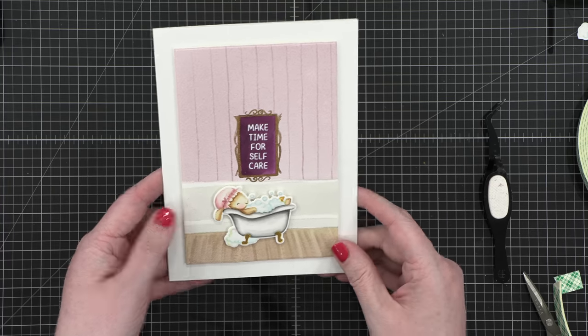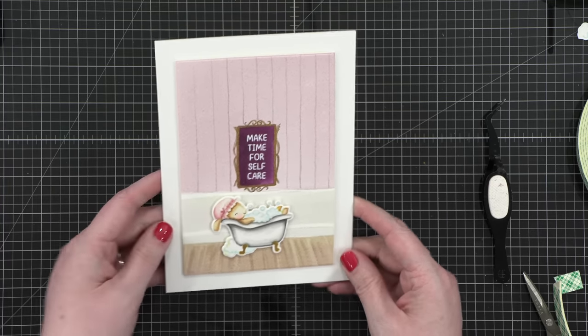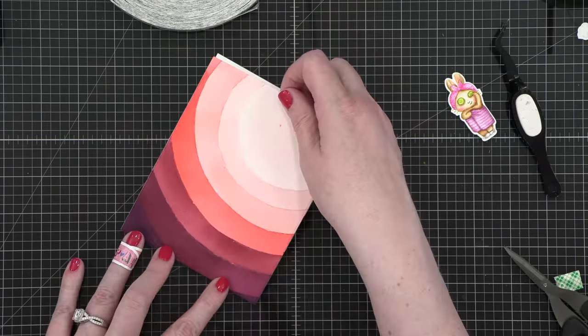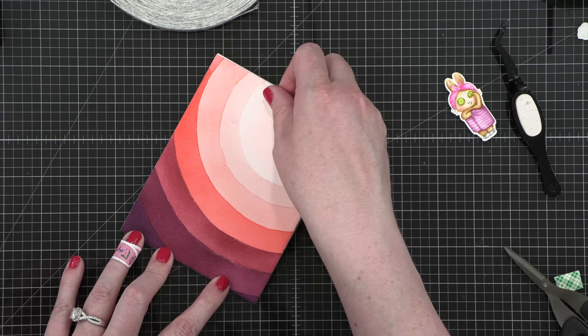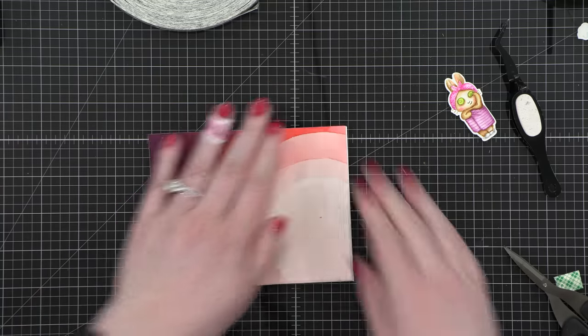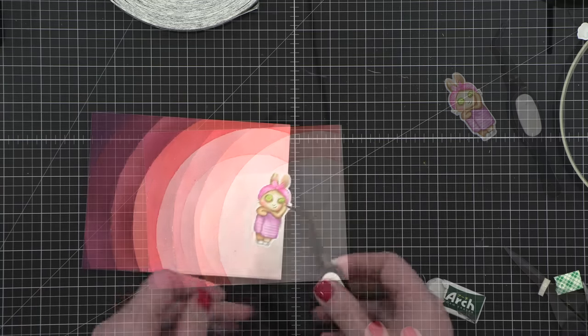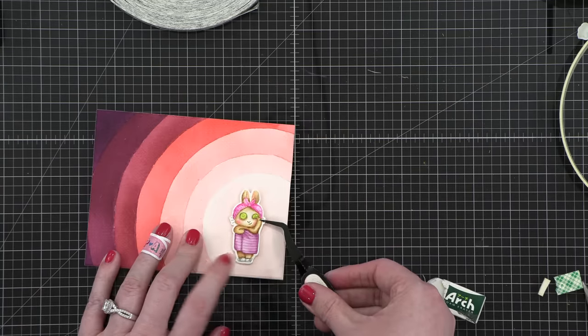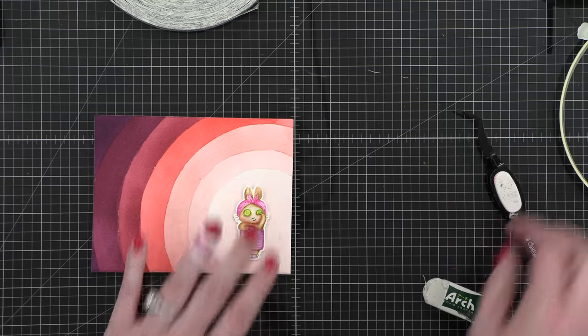I'm going to set this one aside while I work on the second card. I put some adhesive on the back of my watercolor panel and then adhered it directly to an A2 card. Now I'm going to take my little bunny and I've put some foam adhesive on the back and I'm putting it right over that area in the corner.